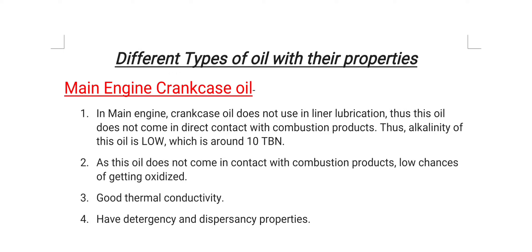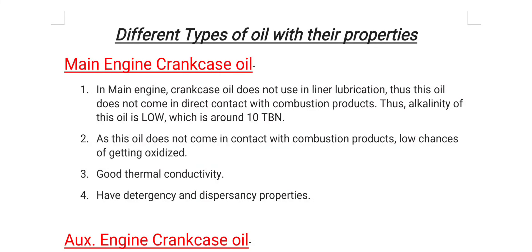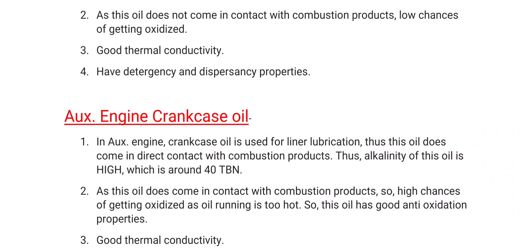Our first grade is main engine crankcase oil. In main engine crankcase oil is not used for liner lubrication, thus this oil does not come in direct contact with combustion products. Therefore, the alkalinity of this oil is low, which is around 10 TBN (Total Base Number). As this oil does not come in contact with combustion products, there are low chances of getting oxidized. This oil has great thermal conductivity, and also has detergency and dispersancy properties.